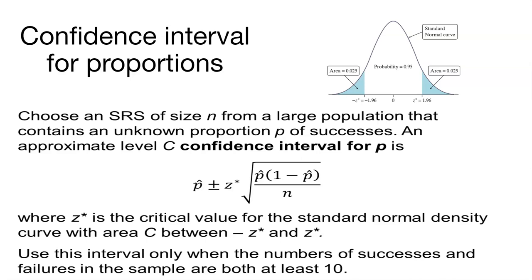And z star is going to be that critical value from the standard normal density curve where there's some area we'll call c between negative z star and z star. So that z star value is going to be a value you look up on the z table.